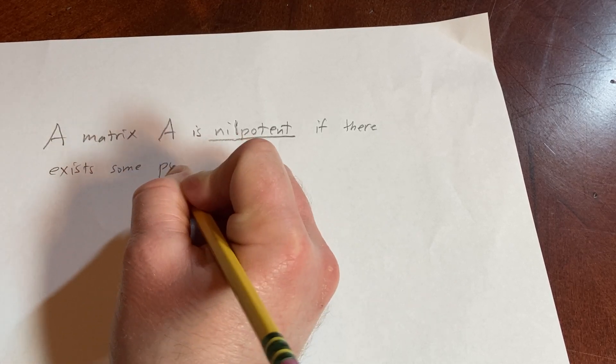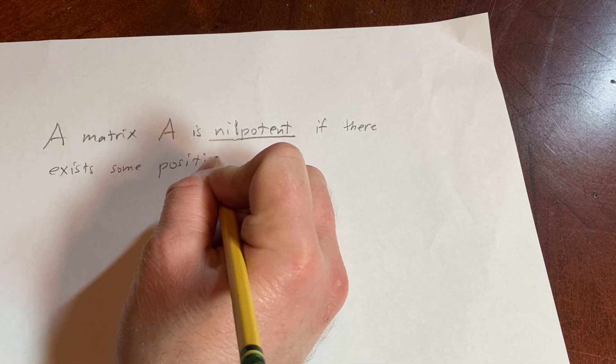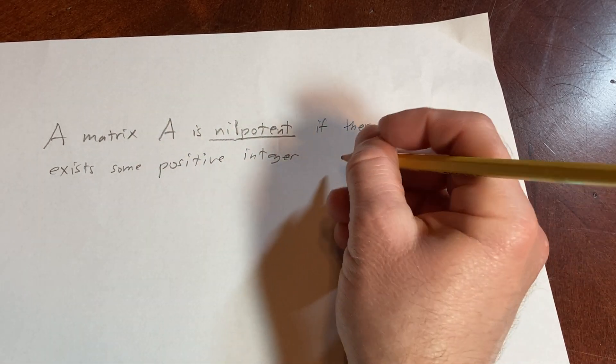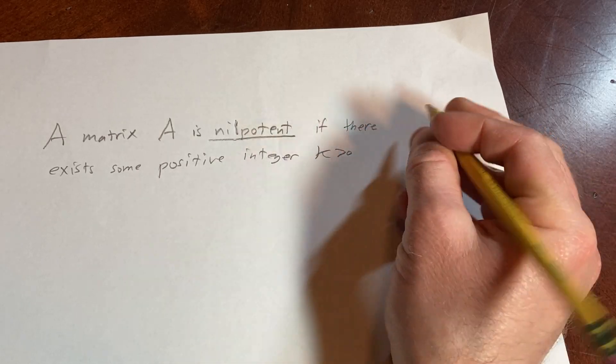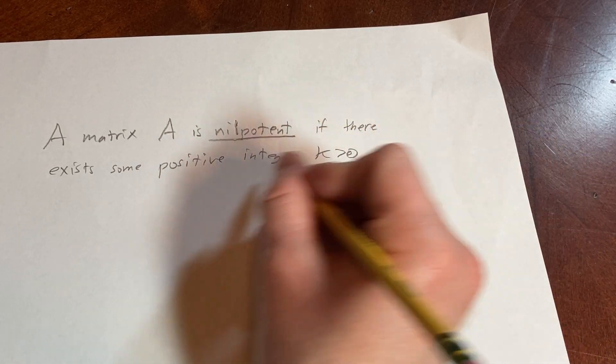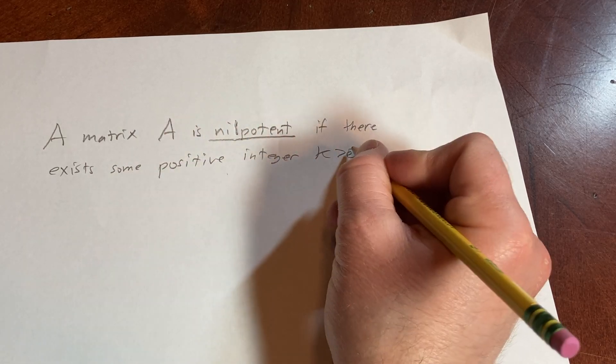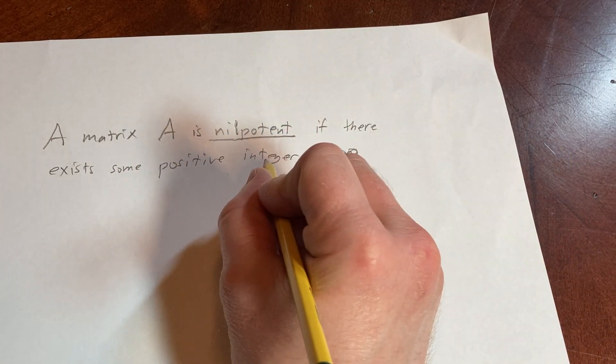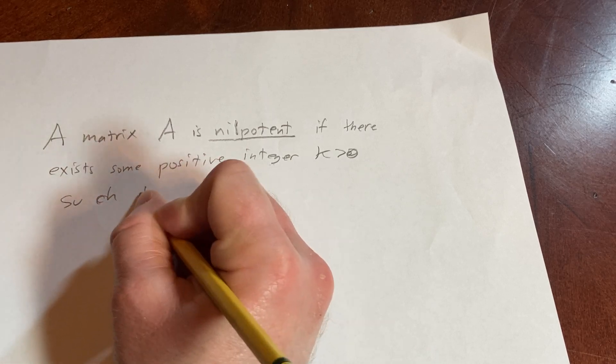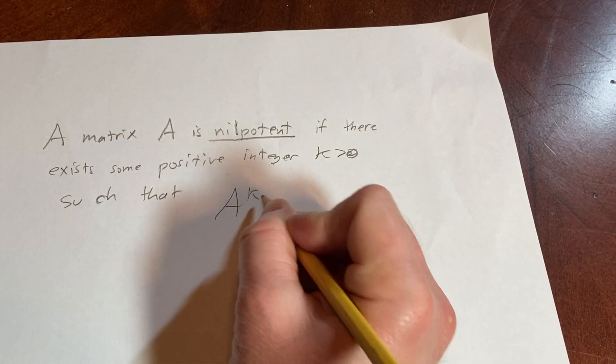some positive integer K greater than zero. I guess we can use K greater than zero, or I can just say there exists K greater than zero. I'm saying it twice, I guess - positive integer, and I'm also saying it's positive here - but I am specifying it is an integer such that A to the K is equal